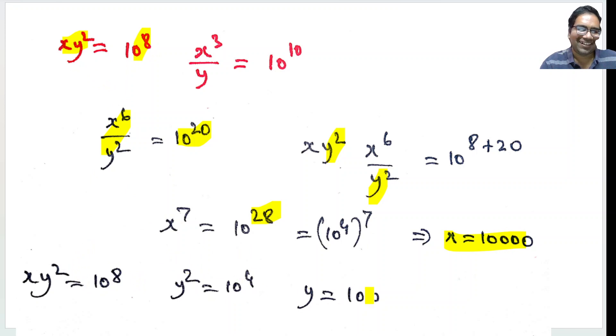So, y = 100, 10 square, right, very simple problem. Just that we have to square this and remove y, right guys. Thank you.